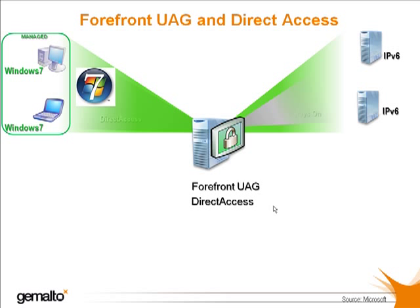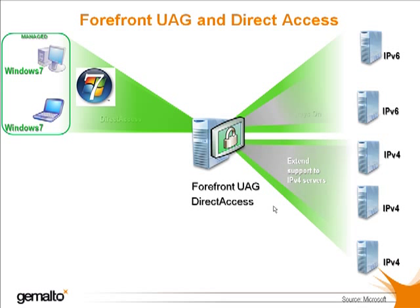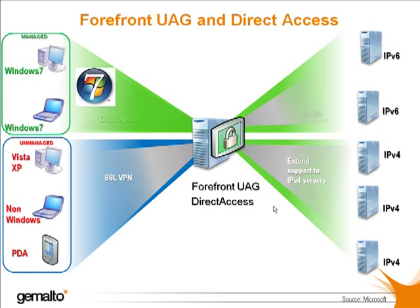So in 2010, Microsoft introduced Forefront Unified Access Gateway, UAG, which includes Direct Access and also some additional components that make it easier to integrate without the need to deploy IPv6 on the network. So for non-Windows 7 clients and for web application servers that do not support IPv6, UAG is the answer.